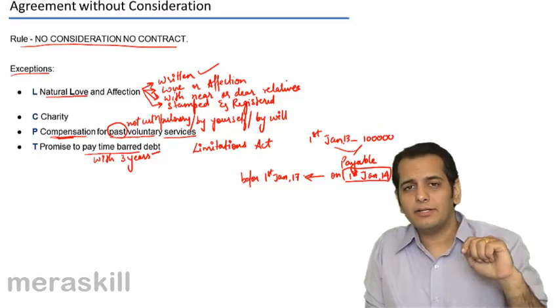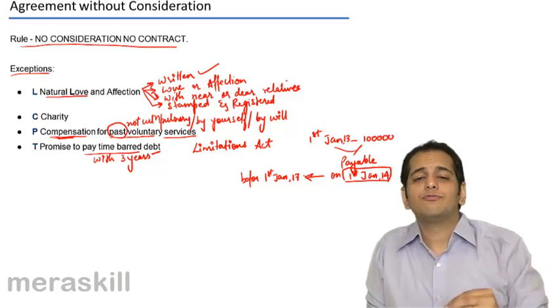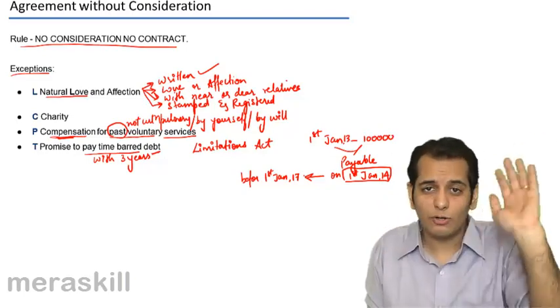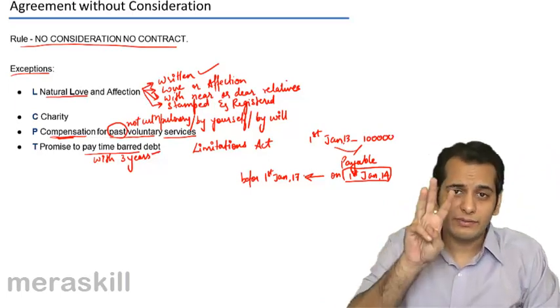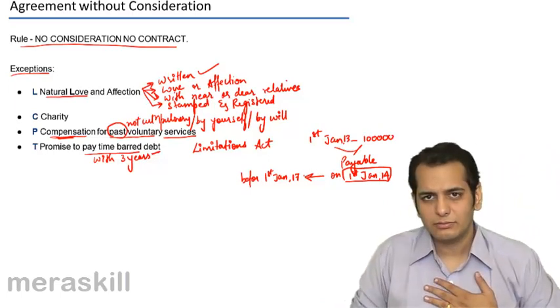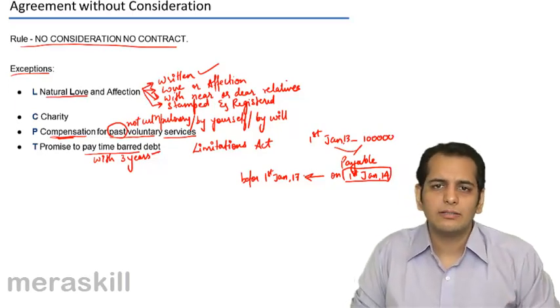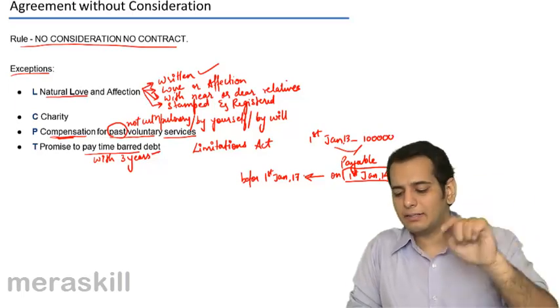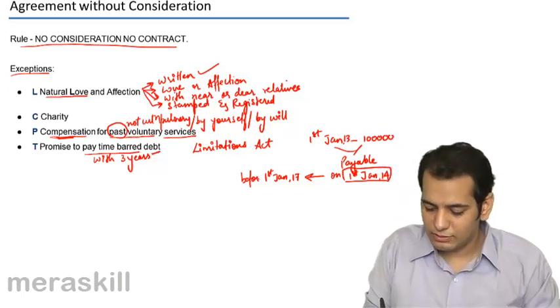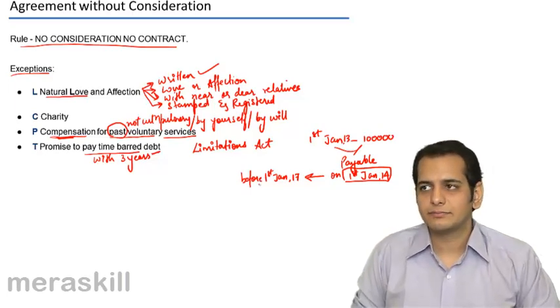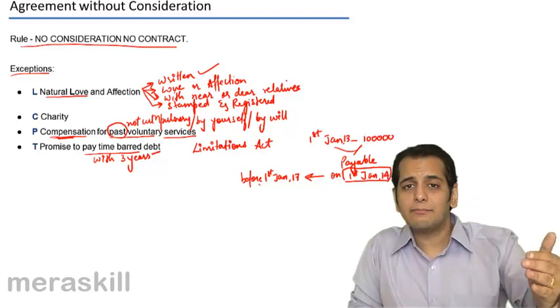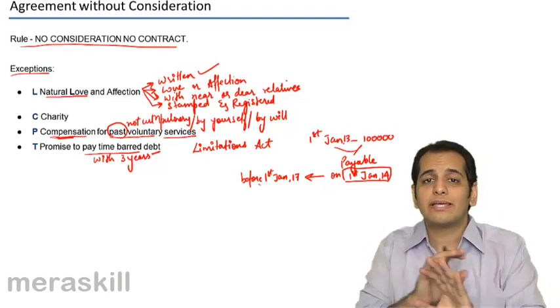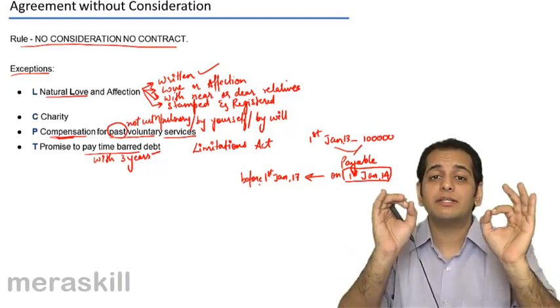If you file a complaint, if you go to the court, let's say on 1st Jan 2018, the court will not entertain you. The police will not entertain you. They will say you had 3 years to take action against me. You did nothing all this while. Now we are not going to support you. You should have filed a complaint before 1st Jan 2017. Now that time has elapsed. Now that time has expired. Now you cannot do anything. Now you cannot recover the money with the help of law.